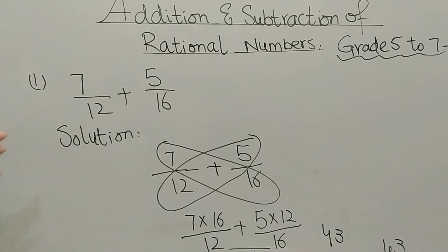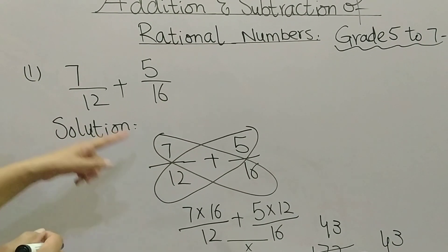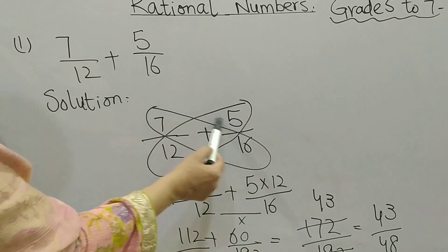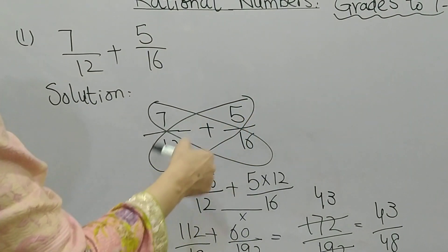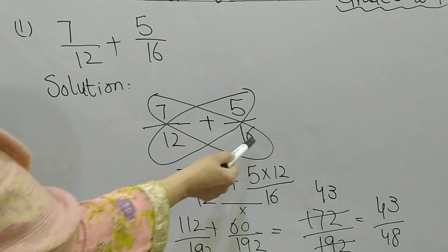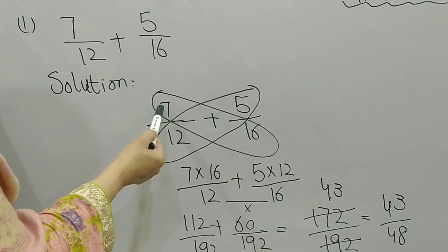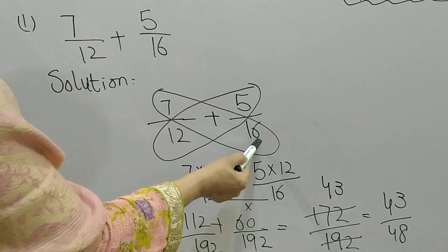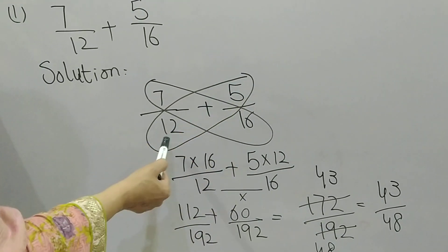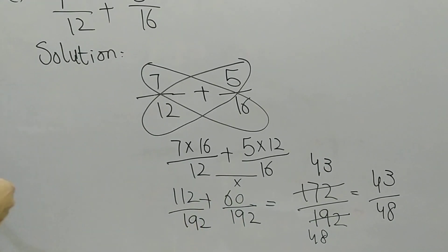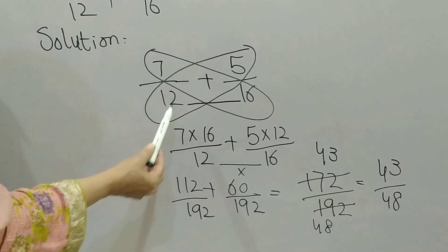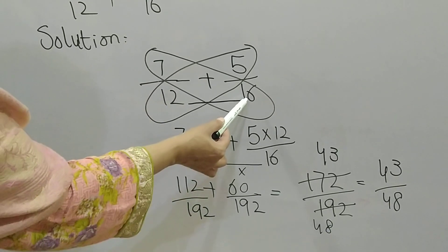There is another method of doing the same question called the butterfly method. For 7 by 12 plus 5 by 16, I draw cross lines because I am going to multiply these numbers crosswise — 7 is multiplied by 16 and 5 is multiplied by 12. When I multiply 7 by 16 I get 112, and when I multiply 5 by 12 I get 60.